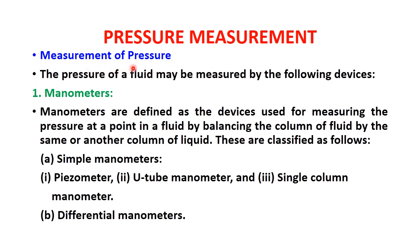The pressure of a fluid may be measured with the following devices. First, manometers are devices which can measure pressure. Second, there are mechanical gauges used for measuring pressure at a point in a fluid by balancing the column of fluid by the same or another column of liquid. These are classified as follows.